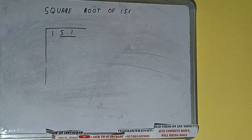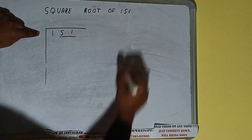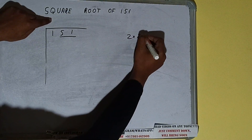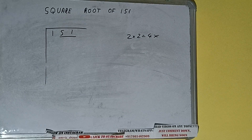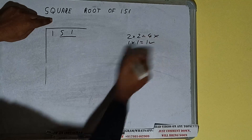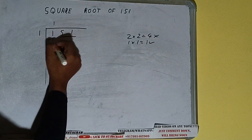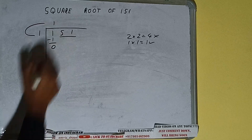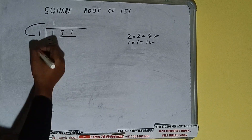First we'll divide the leftmost digit. The rule is: whatever number we write on top, we have to write on the side also. If we write 2 here and 2 here, it will be 4 which is greater than 1, so we cannot use it. If we write 1 here and 1 here, it will be 1, which is good. So 1 here and 1 here — 1 subtract 0 will be left. We did 1 into 1, so add both: 1 plus 1 will be 2.